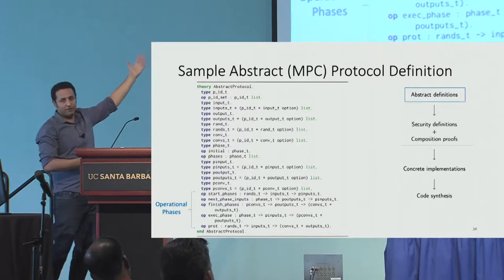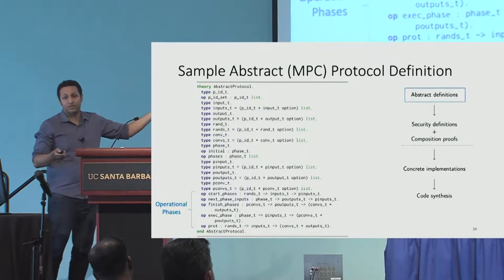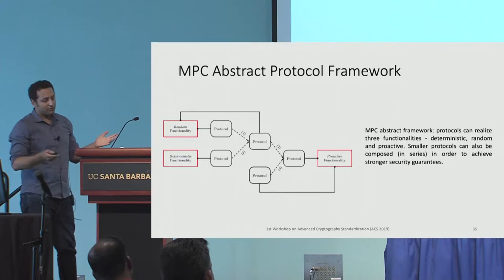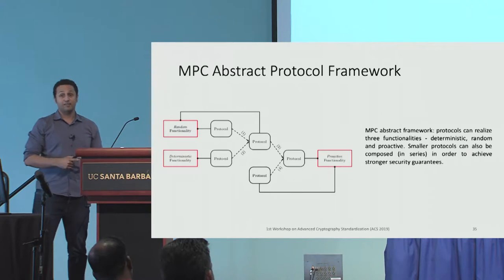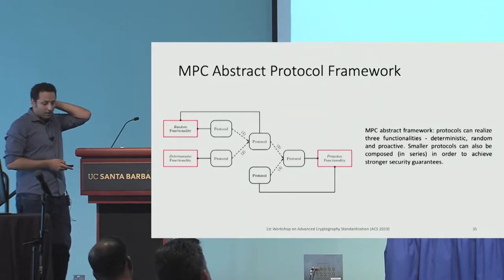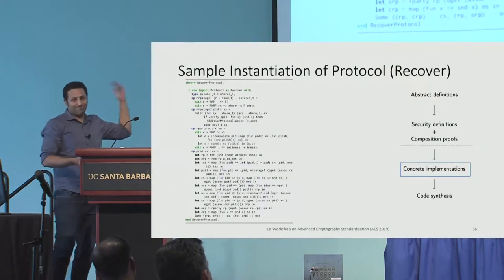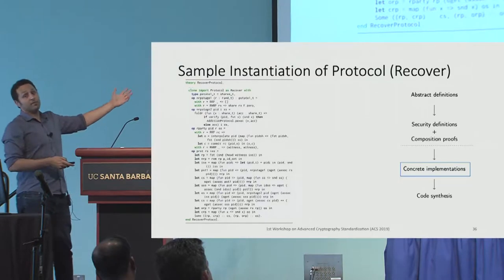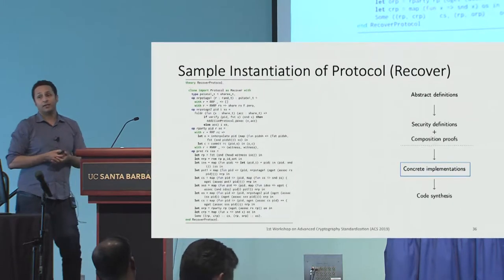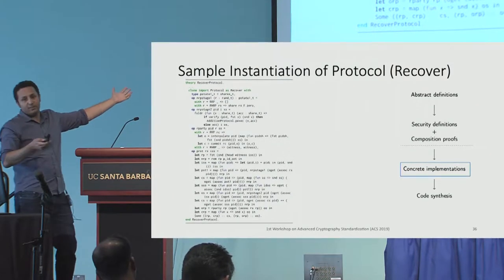We did the same for MPC — an abstract definition with inputs, player IDs, phases, and an output phase, which we think of as the ideal functionality. Then you instantiate it using concrete protocols. We initially were ambitious and wanted a proactive protocol for dynamic groups with honest majority — that didn't happen. We settled for honest majority and proactive but no dynamic groups yet. We have composition theorems in the proactive setting formalized at the abstract level. Here for instance is the recover protocol: when a party has been reset and needs to rejoin MPC, every party generates a random polynomial with zero at that share's index.